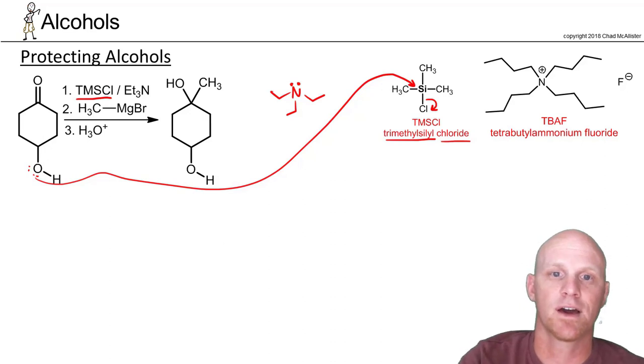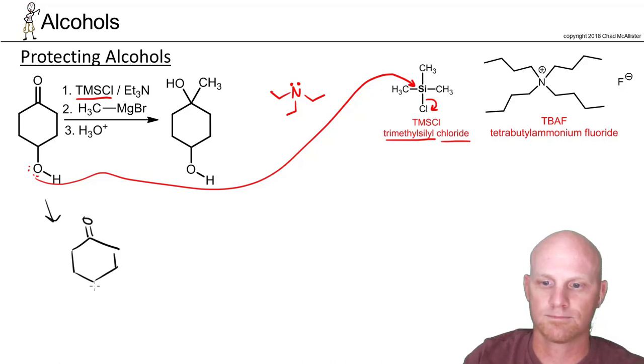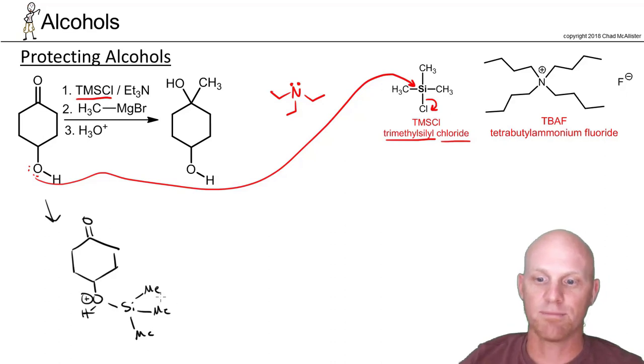And if you kind of look at what that's going to end up looking like here: still bonded to the hydrogen there, the oxygen is going to have a positive formal charge, and that silicon is still bonded to three methyl groups. So instead of writing CH3s, I'm gonna get a little lazy here and write methyl groups.